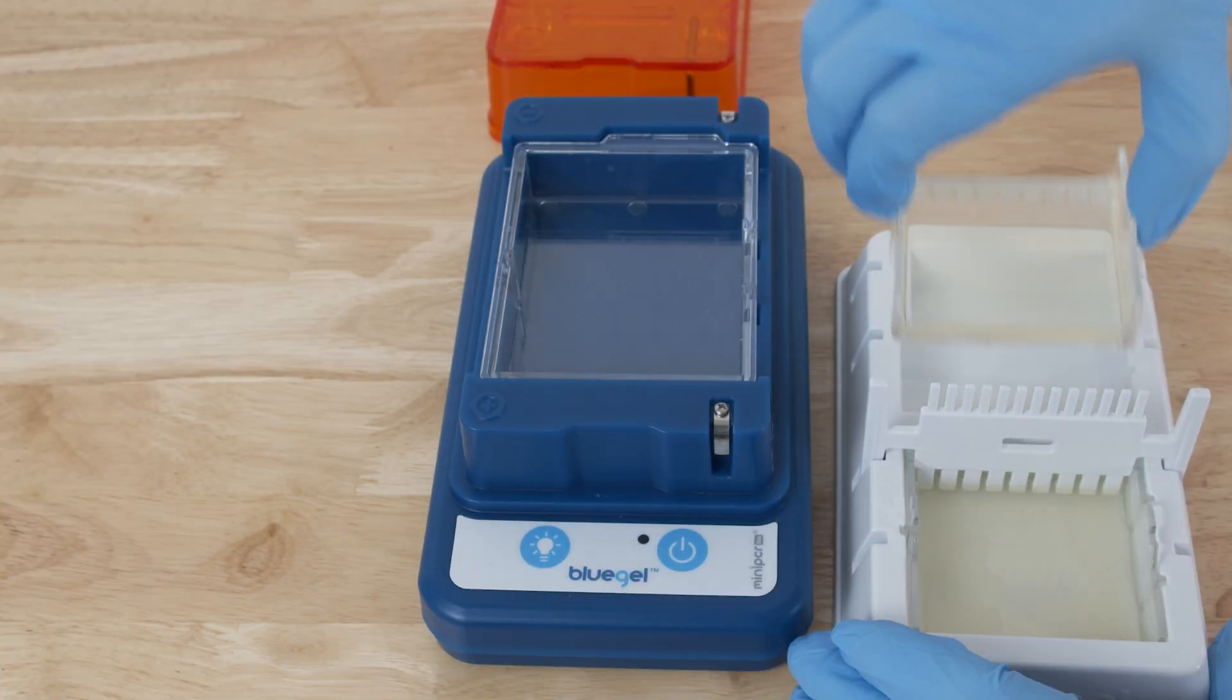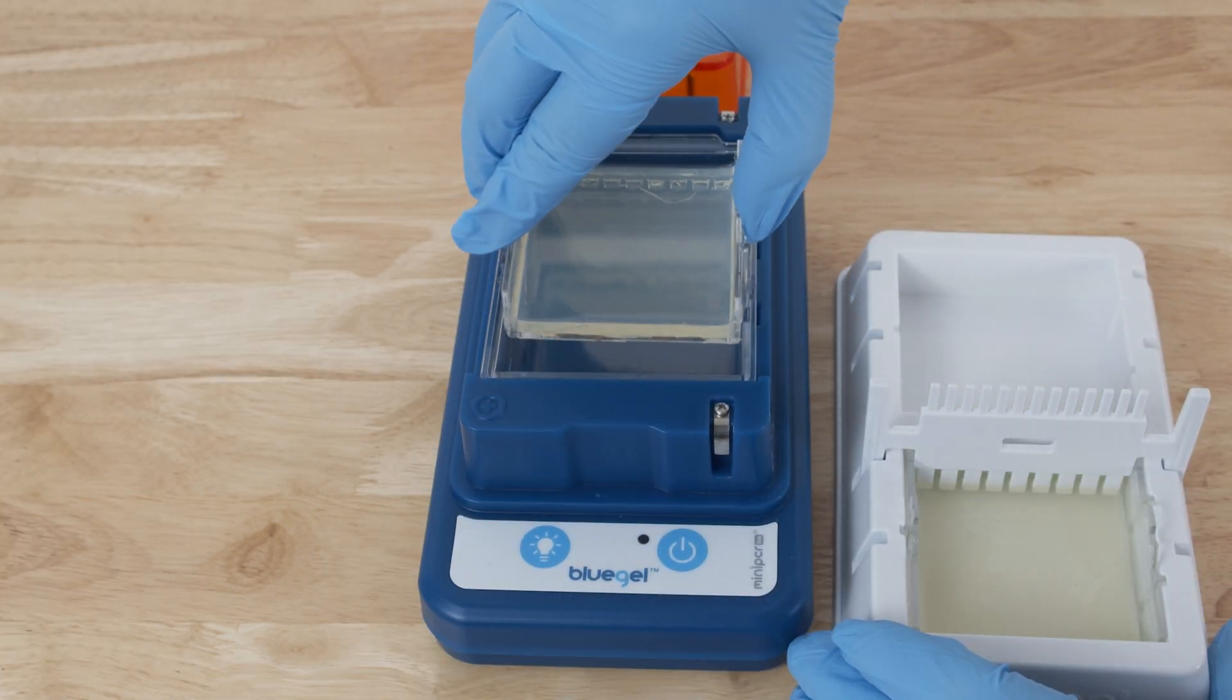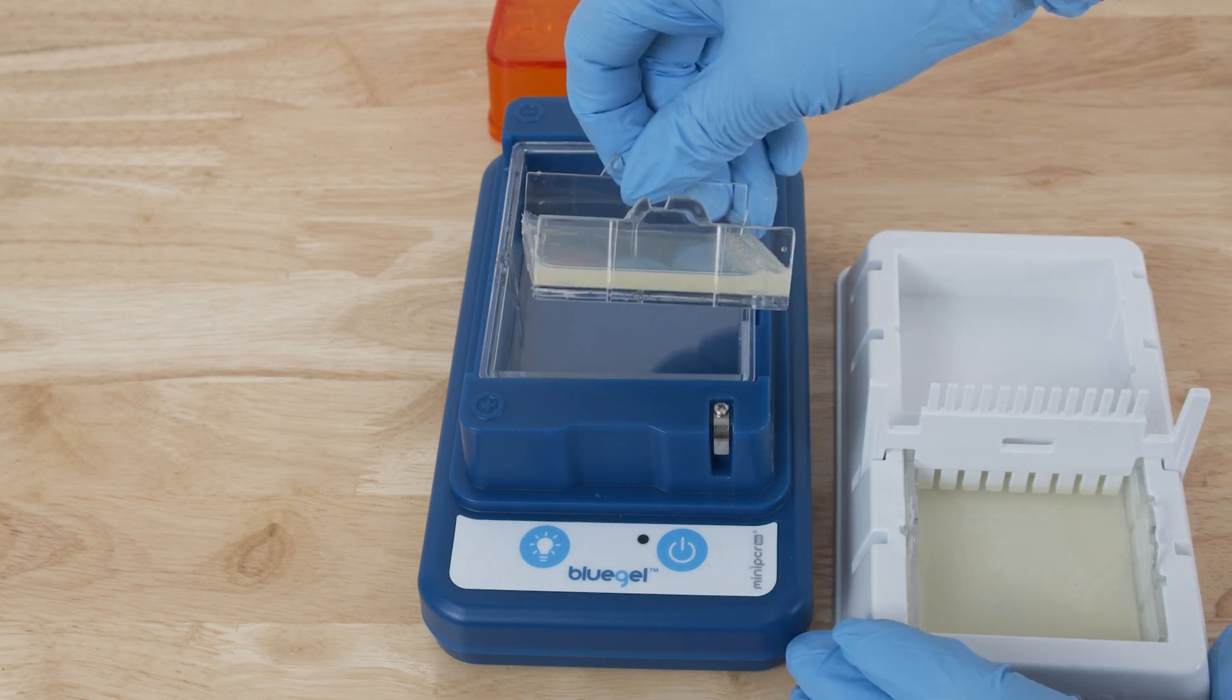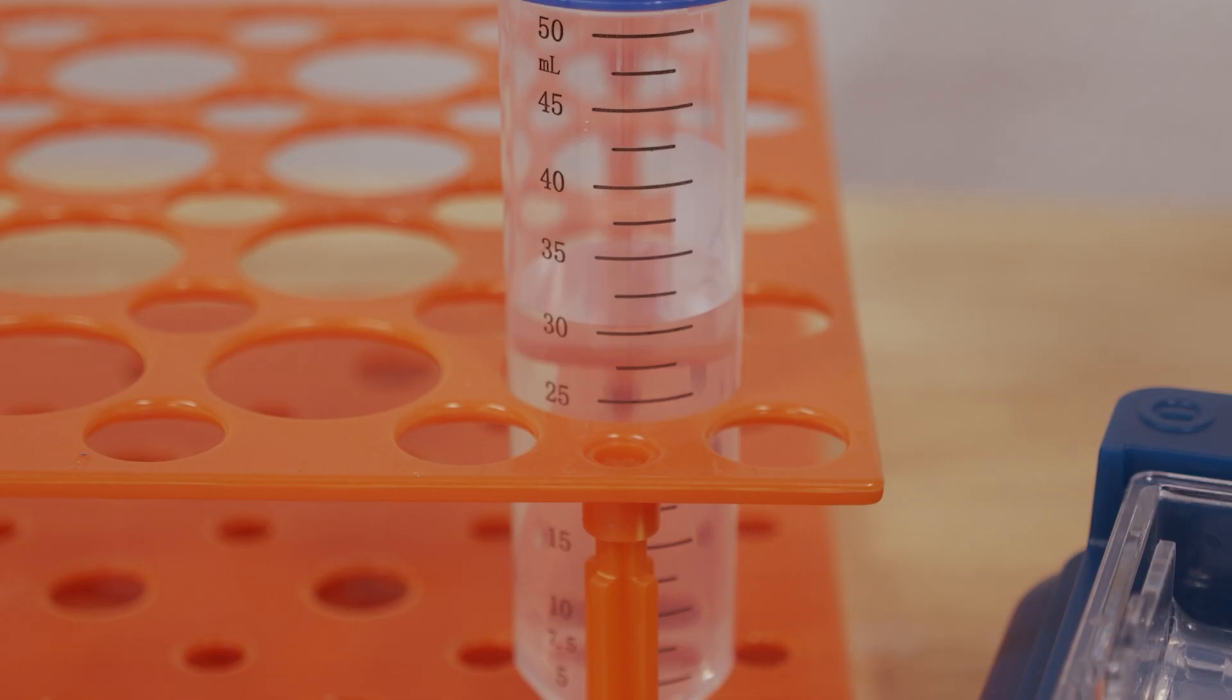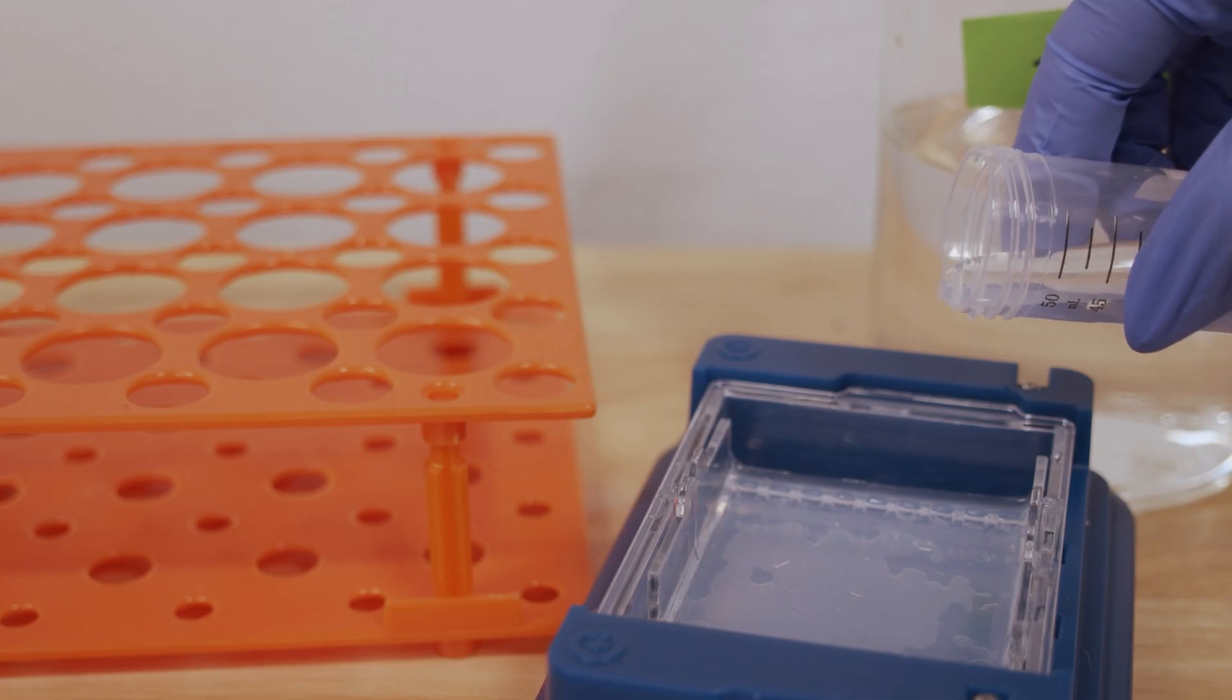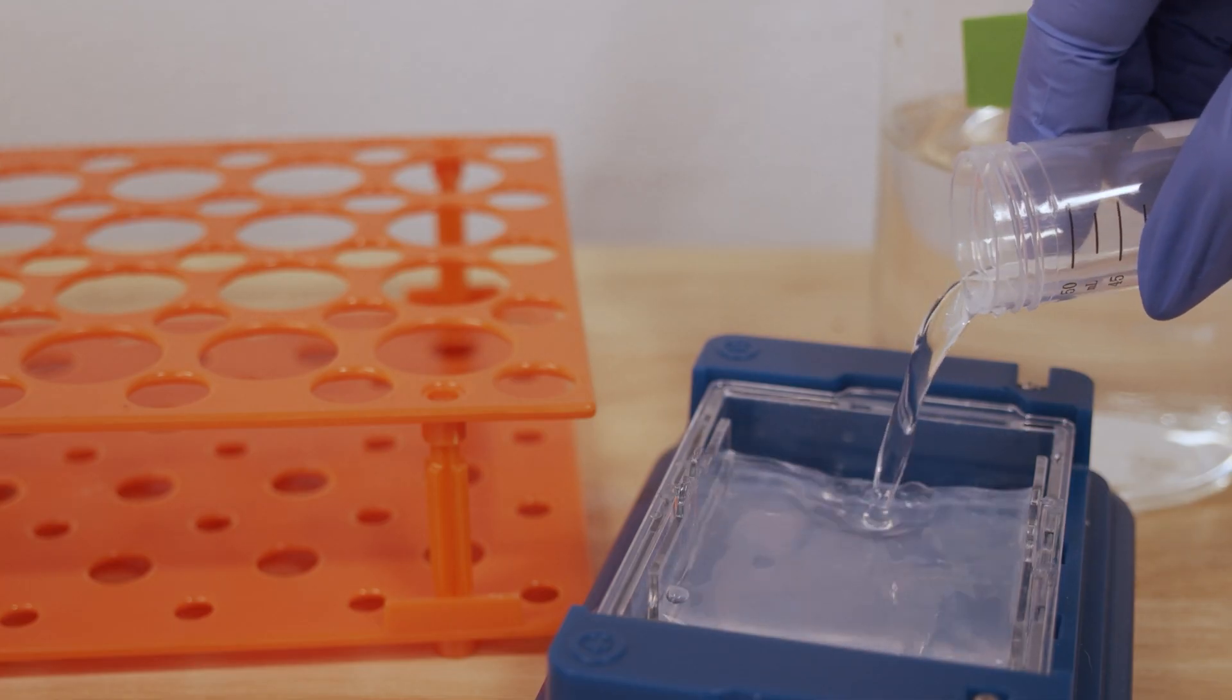Then add the gel tray containing the gel into the buffer chamber. It too will only fit in the correct orientation. Add 30 milliliters of TBE buffer to the buffer chamber. Buffer should just cover the top of the gel.